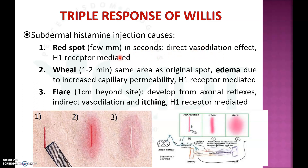The triple response involves three types of reactions: First, a red spot occurring within seconds due to direct vasodilation, which is an H1-mediated response. Second, a wheal forming within one to two minutes, with edema due to increased capillary permeability mediated by H1 receptor. Third, a flare developing one centimeter beyond the site via axonal reflex causing indirect vasodilation and itching through H1-mediated response.